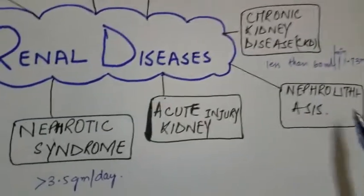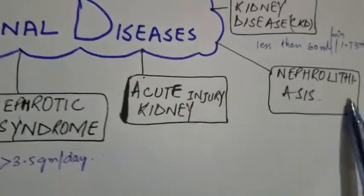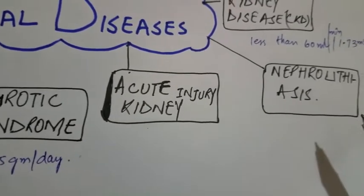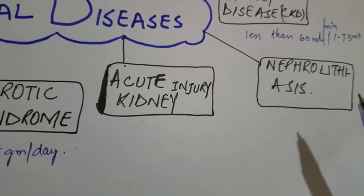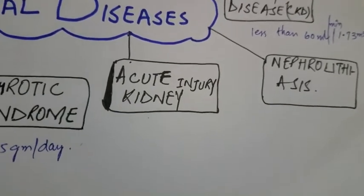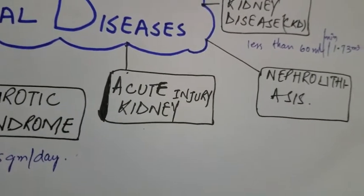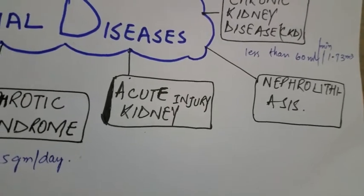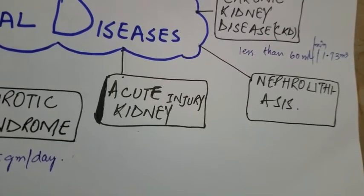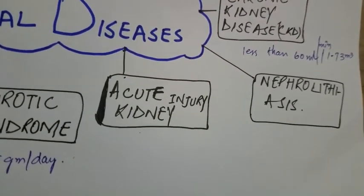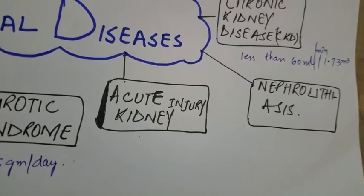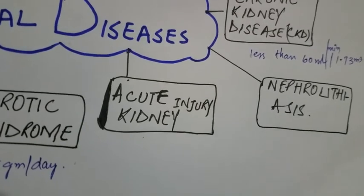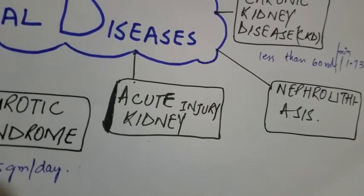Nephrolithiasis refers to renal stones. It manifests as severe spasmodic pain, also called renal colic, or hematuria.